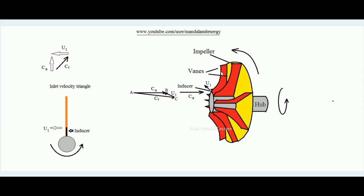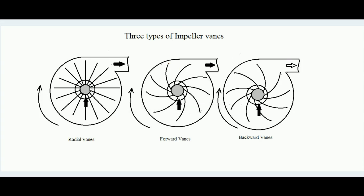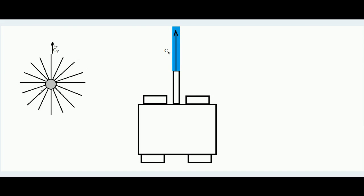Now let us talk about the exit velocity triangle. First, the case of radial vanes — vanes oriented in the radial direction. There are three types of vanes: radial vanes, forward vanes (where the exterior tip is inclined toward the direction of rotation), and backward vanes (where the exterior tip is inclined against the direction of rotation).